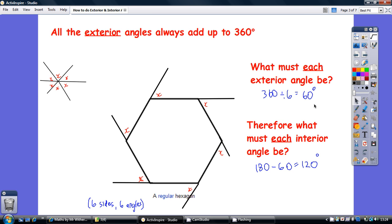And once you know the exterior angle, you can work out the interior angle by taking that away from 180. Because as we said a minute ago, the exterior plus the interior angle equals 180 degrees.